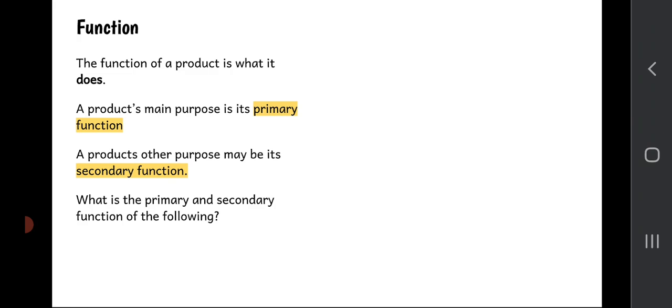I would like you to copy down these words into your jotter. You may pause the video here. The function of a product is what it does, what it can do. So the product's main purpose, its main job, is what we call its primary function. But sometimes products have other jobs to do. They have auxiliary functions or secondary functions as we call them.